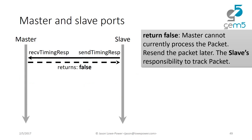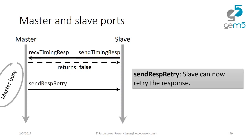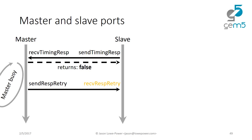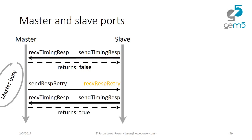The same thing can happen in the other direction: the slave can call sendTimingResponse, and receiveTimingResponse on the master side can return false if the master is busy. At some point the master then sends a response retry to the slave, meaning the slave can now send it again. So if you're implementing a slave you also need to implement receiveResponseRetry. It works exactly the same way.